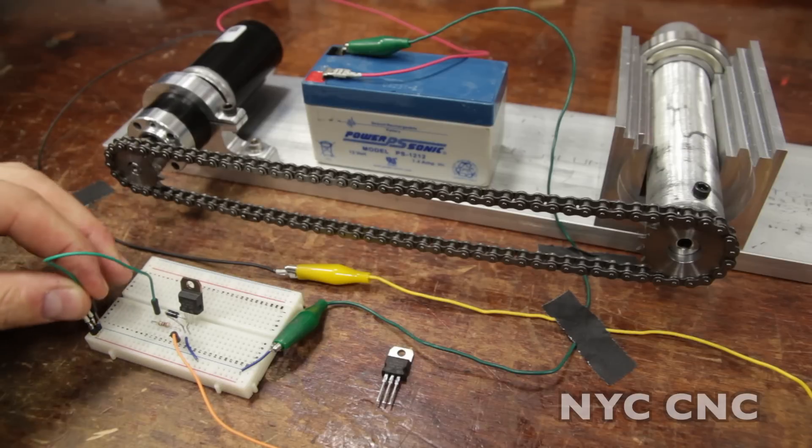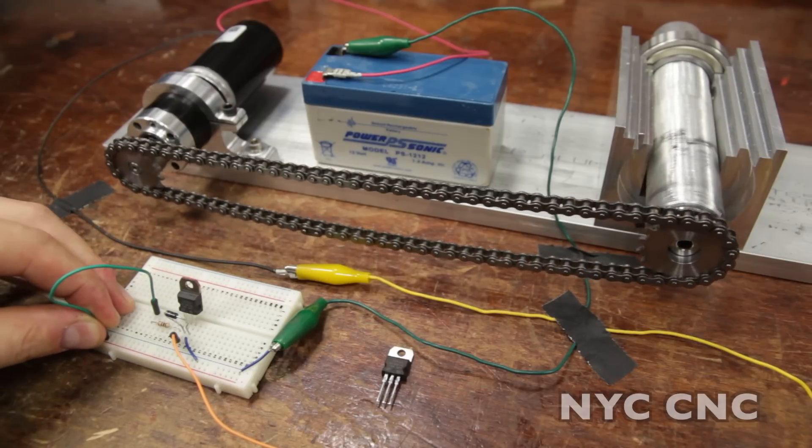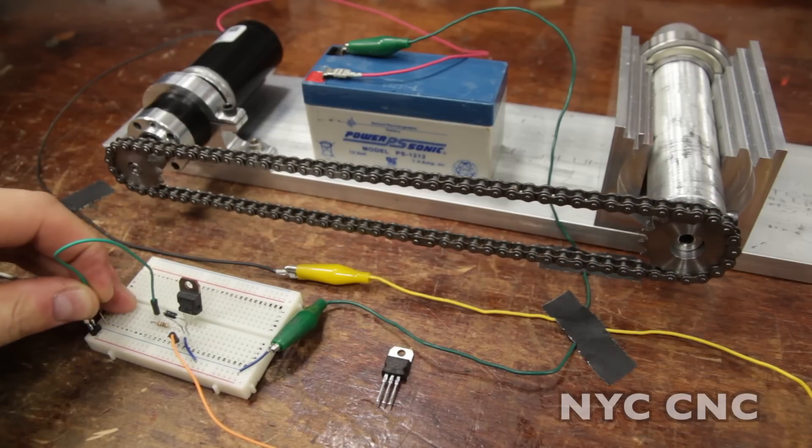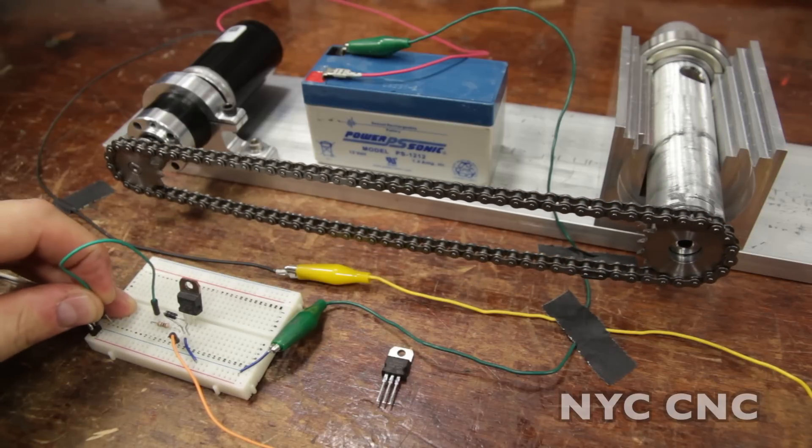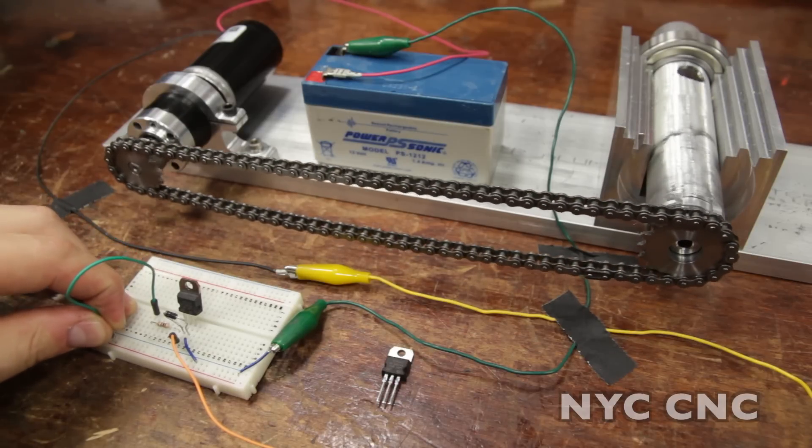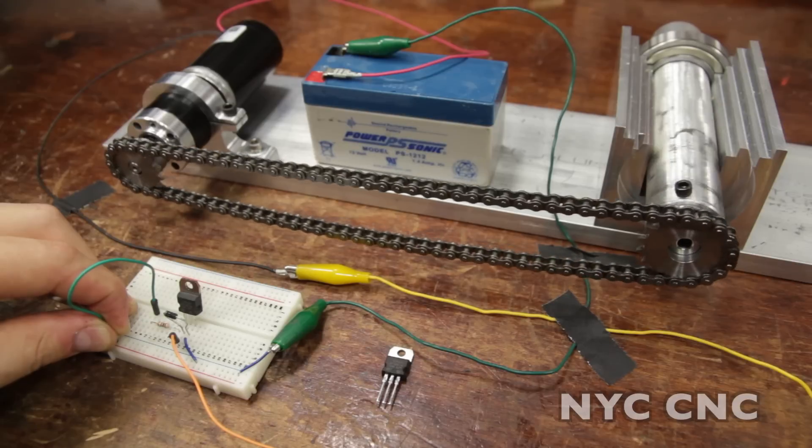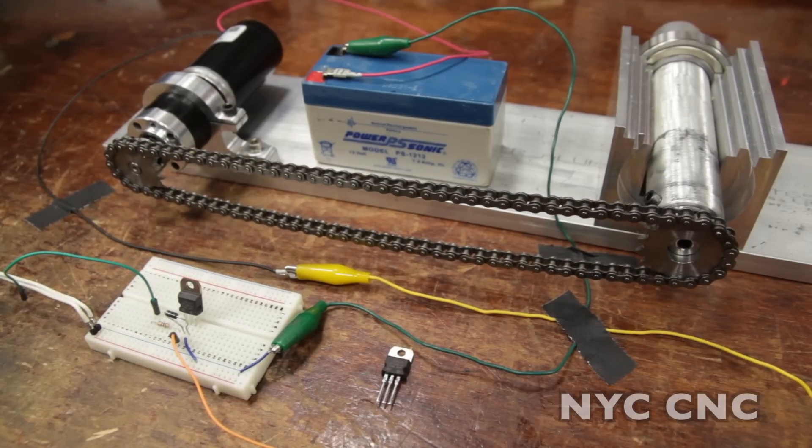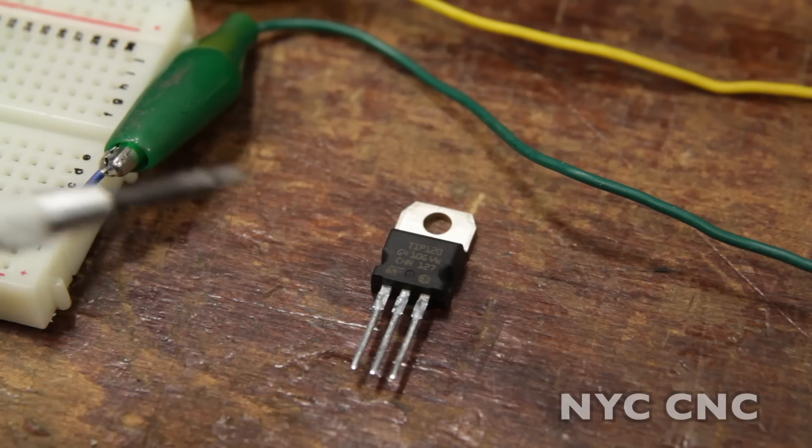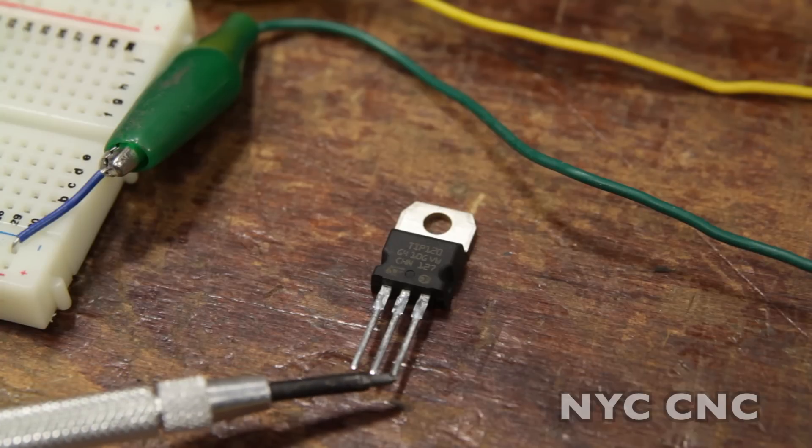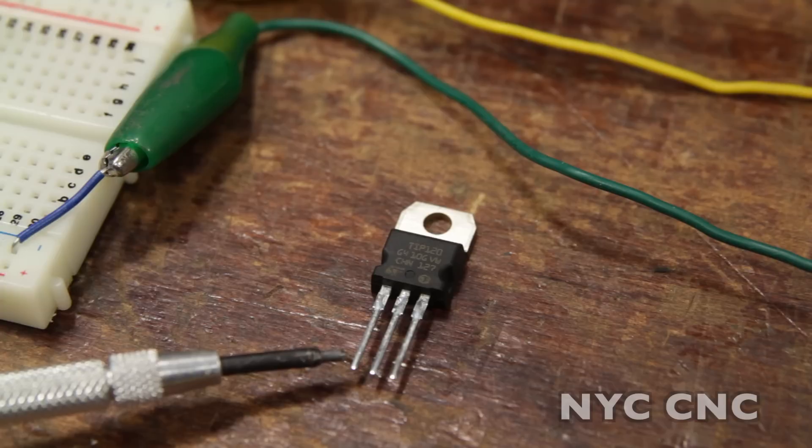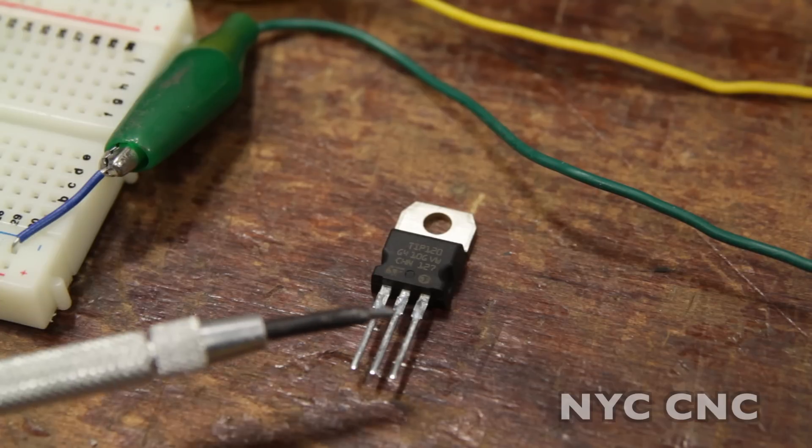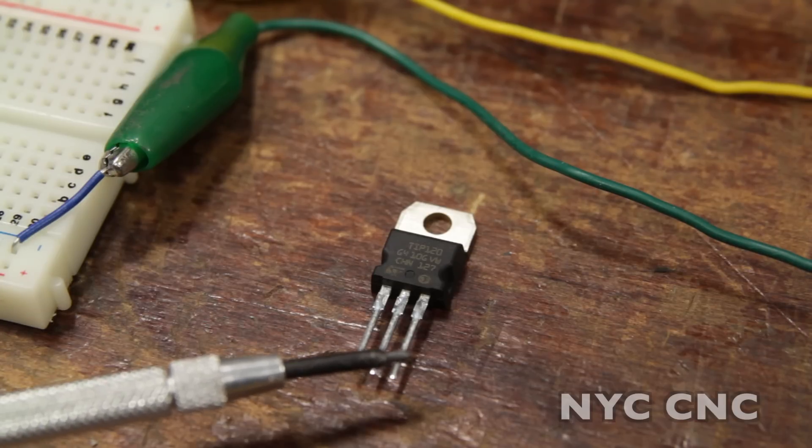This is a TIP 120 power Darlington transistor that I purchased from Adafruit. These are great, two dollars and fifty cents for three of them and despite their small size they can actually power quite a bit, this particular chip up to five amps continuous. Let's take a look at how they work. Like any transistor it has a base, a collector, and an emitter. When we apply a small amount of current like a five volt signal from an Arduino or a Raspberry Pi to the base it connects the collector and the emitter.